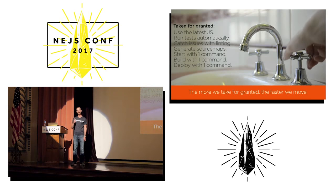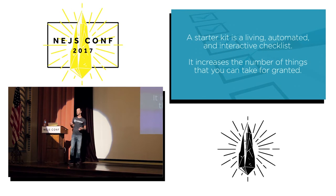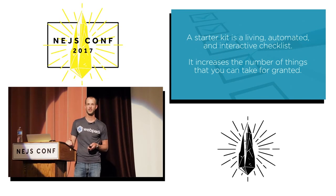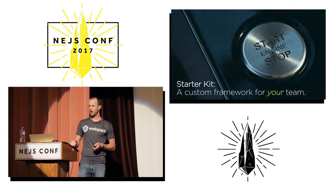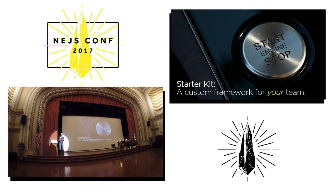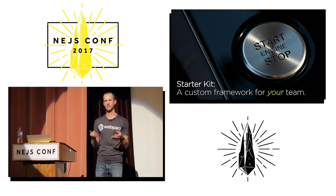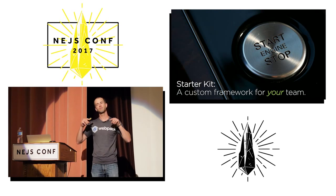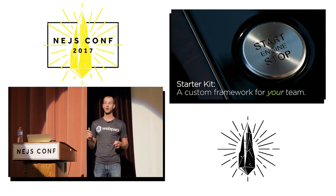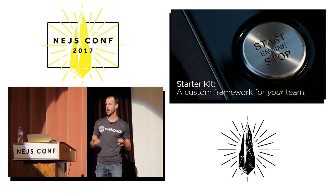When you can take all of this for granted, you can focus on the hard problems in programming. This plumbing should not be burning your cycles — it should be a solved problem for your team. The more we can take for granted, the faster we move and the higher the quality. I think of a starter kit as a living, automated, interactive checklist. A lot of you may feel like you kind of have a starter kit — create-react-app, Angular CLI, Ember CLI — but I believe that's not enough. Go find a project like that, fork it, make it your own, and add your opinions.